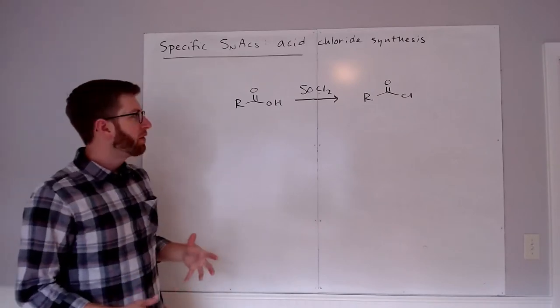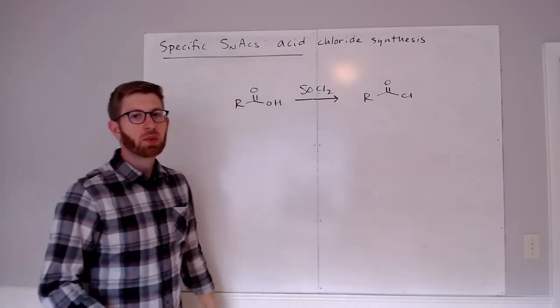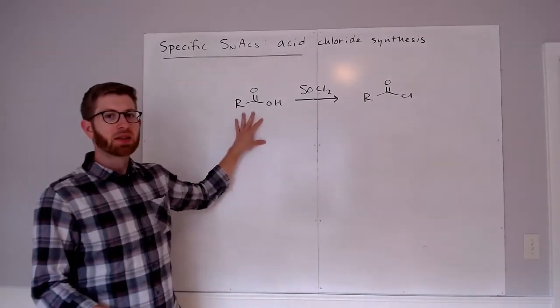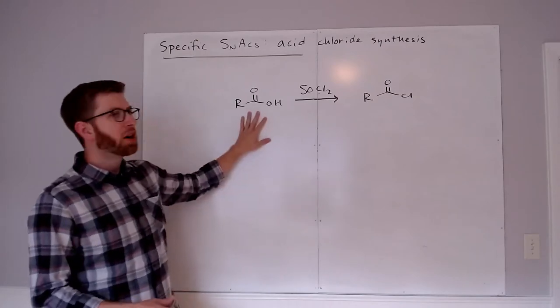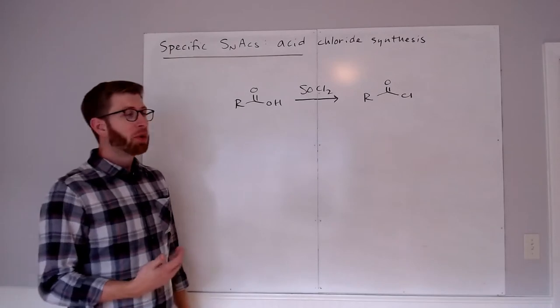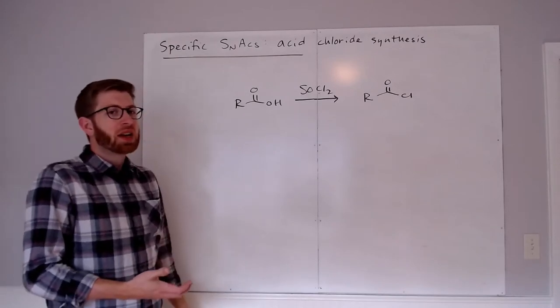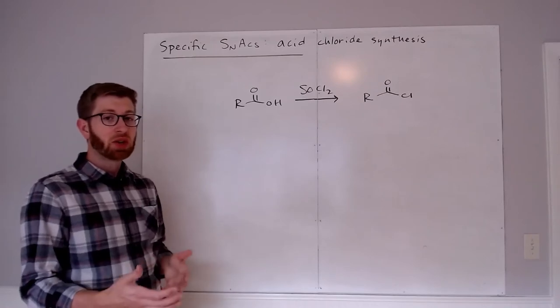To get started, I want to focus on how we would synthesize acid chlorides. It turns out that we do this from carboxylic acids themselves. That seems like something that shouldn't work. We know that these compounds are below acid chloride on our reactivity ladder, but the reagent that we use isn't exactly Cl-, so we're not doing a SNAC reaction directly via the addition elimination mechanism.